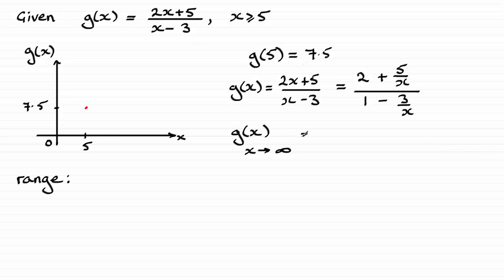So in the numerator, we're going to have 2. And in the denominator here, we're going to have 3 divided by a very large positive number, that's going to tend to 0. So we're just left with the 1.